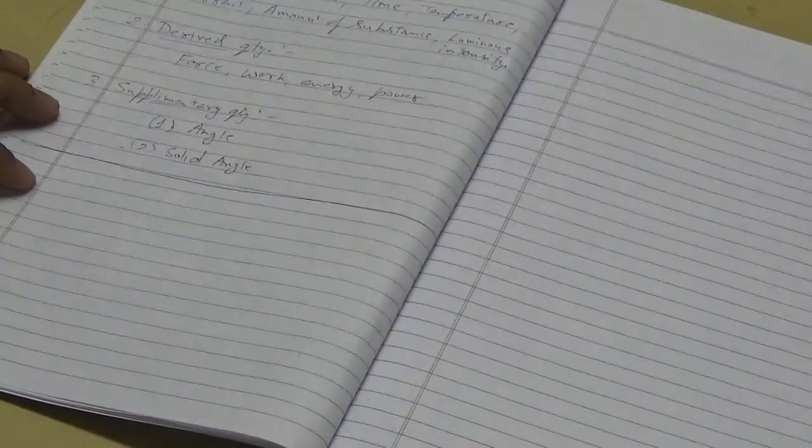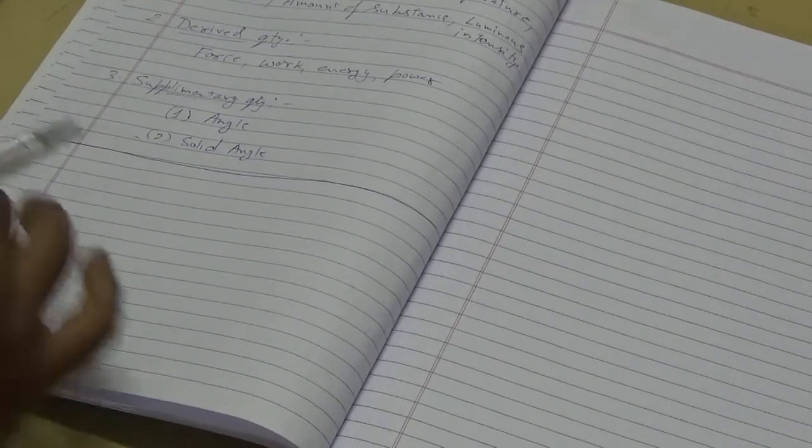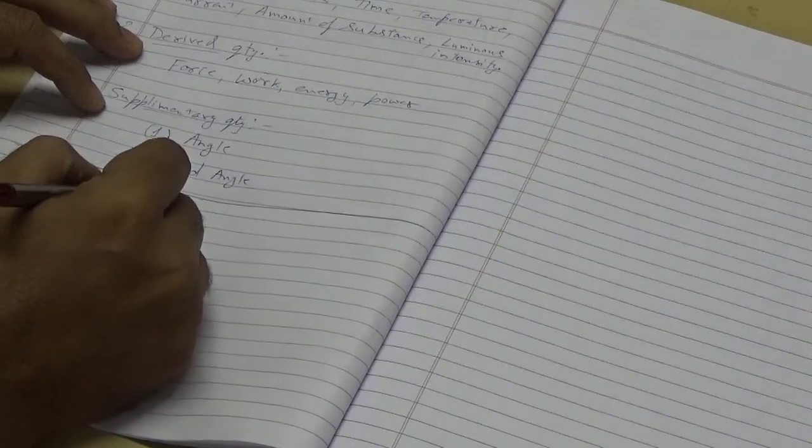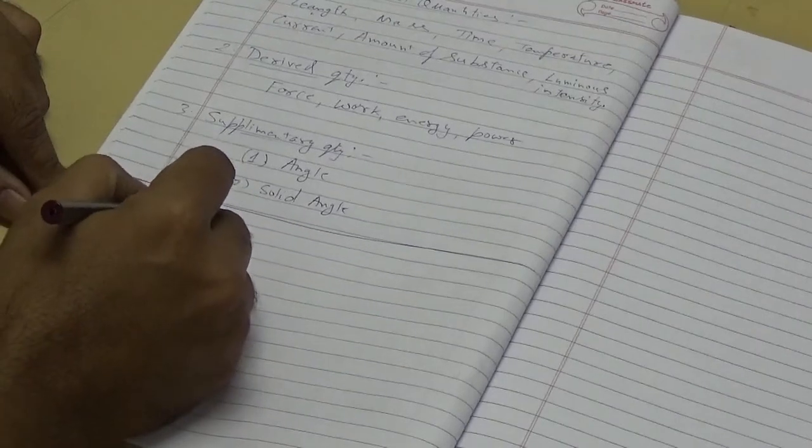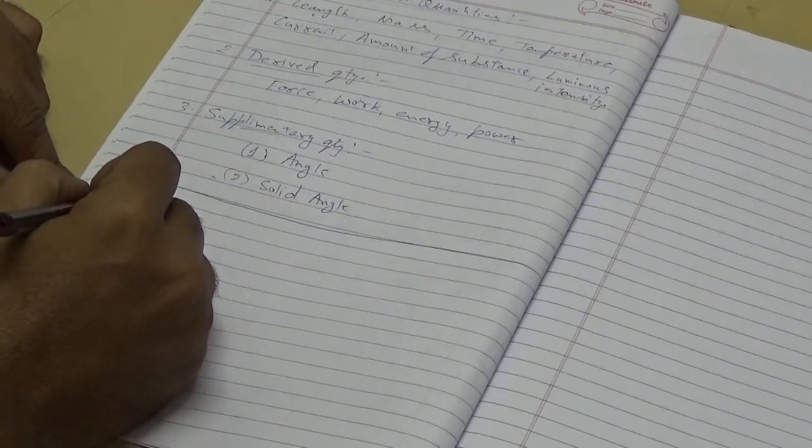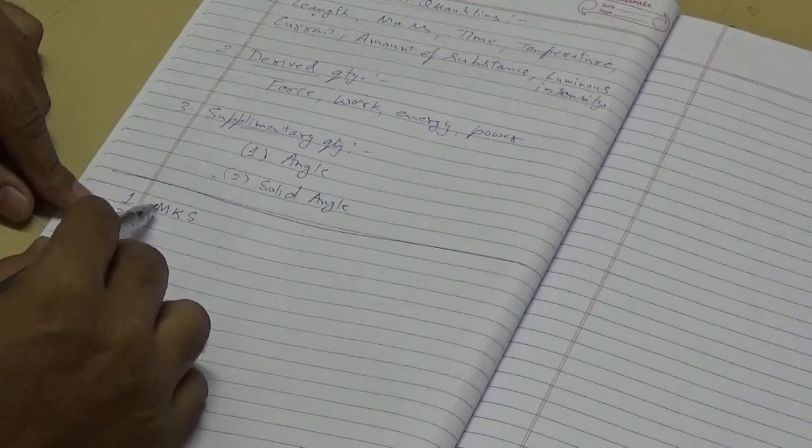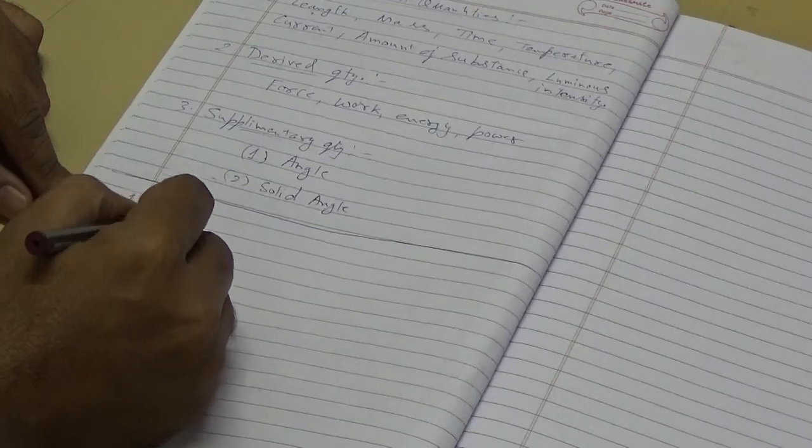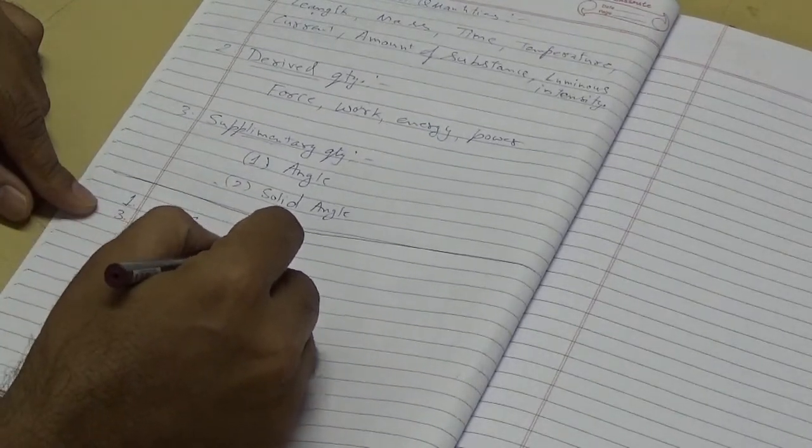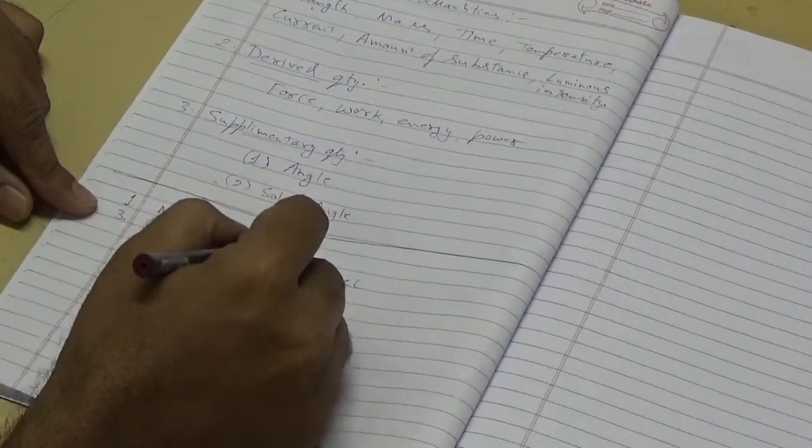SI system - International System of Units. Initially it was MKS system - meter, kilogram, second. But the limitation is only three quantities: provision for only three physical quantities - mass, length and time. Then comes CGS system: length is measured in centimeter, mass in gram and time in second. MKS means meter, kilogram, second.